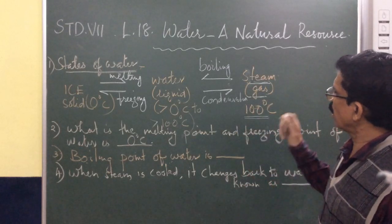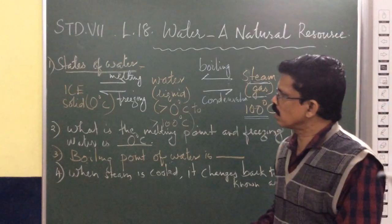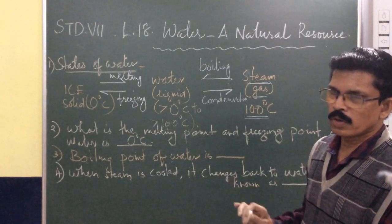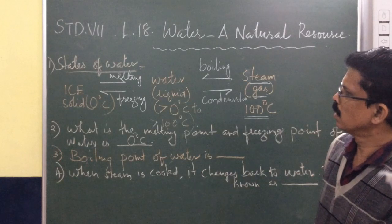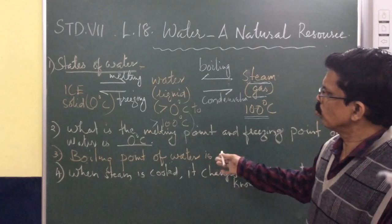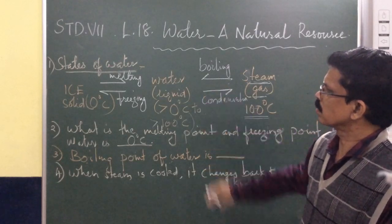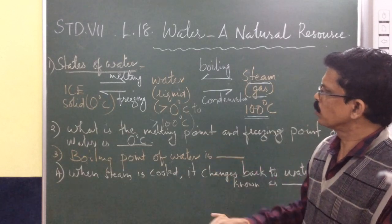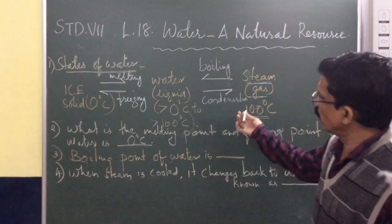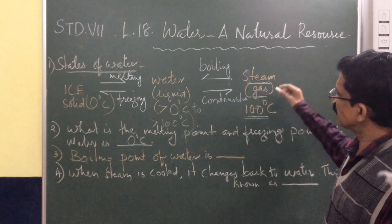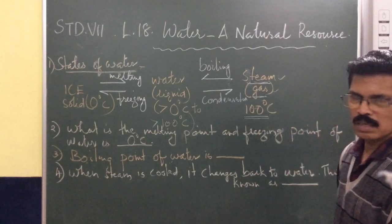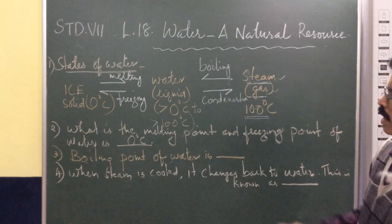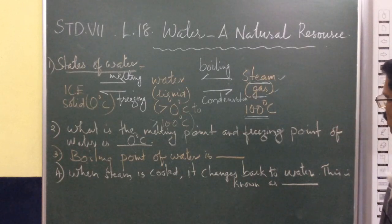So ice becomes water, and water becomes steam — these are the three states of water: ice, water, and steam. Below zero degrees, water freezes to ice. From zero degrees to 100 degrees Celsius, ice can melt and water is formed. And when water is boiled above 100 degrees Celsius, it becomes steam or gas.